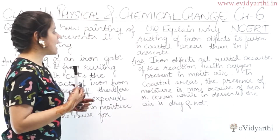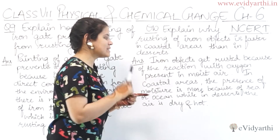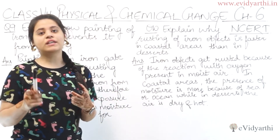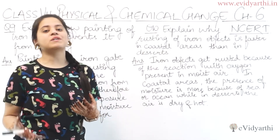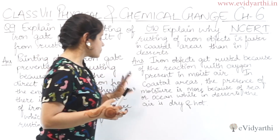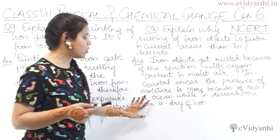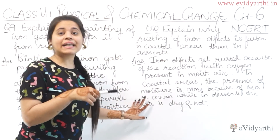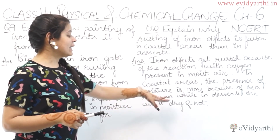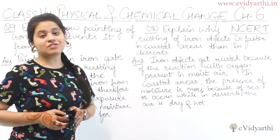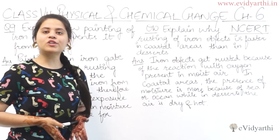Let's see the answer. Iron objects get rusted because of the reaction with oxygen present in the moisture. Iron کی rusting air میں موجود moisture سے ہوتی ہے. In coastal areas, the presence of moisture is more because of sea اور ocean، اس لیے وہاں moisture زیادہ ہوتا ہے. And while in deserts, the air is dry and hot، اور deserts میں air dry اور hot ہوتی ہے.